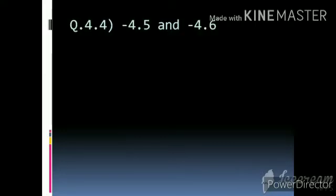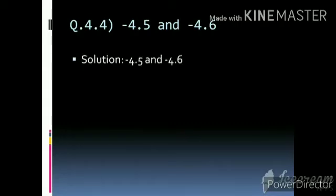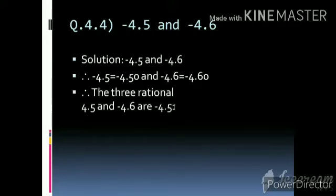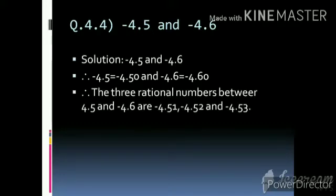Question number 4: between −4.5 and −4.6. We have to write three rational numbers between these two. After the decimal we take one extra zero: −4.5 = −4.50 and −4.6 = −4.60. Between 50 and 60 we get 9 rational numbers; you can write any three. Here we have taken −4.51, −4.52, and −4.53.